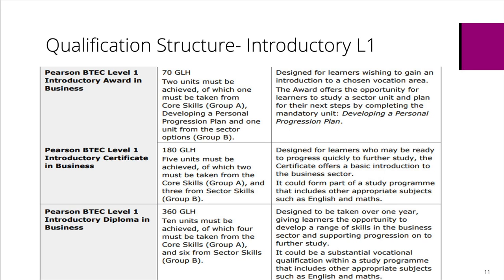The next size qualification is the introductory certificate, which has five units: two units from core skills — being organised and developing a personal progression plan — and three units from the sector skills. You're building up a bit more subject-specific knowledge. Again, this can be delivered short and fat perhaps over a term, or long and thin alongside other level one qualifications in a level one programme.